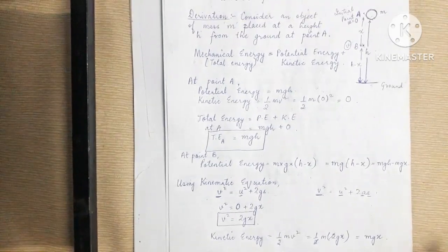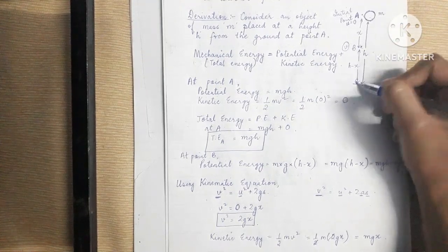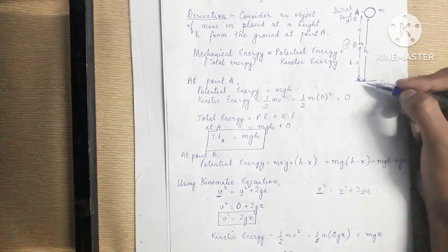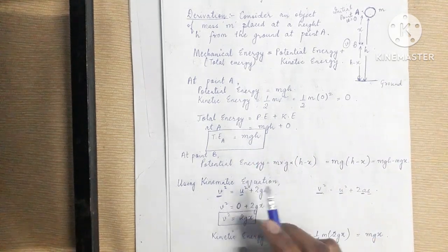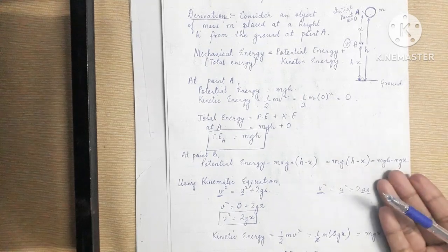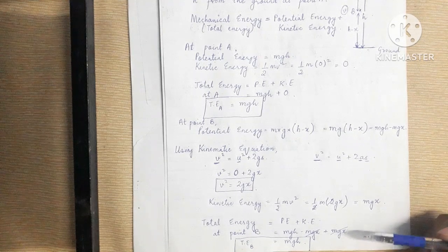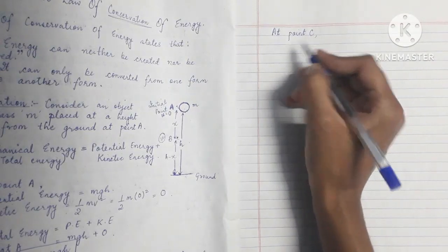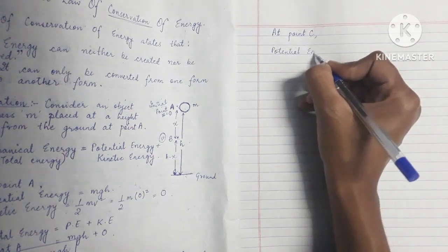Now we move to point C, which is at ground level. When our object moves from A to B and then B to C, we will find total energy at C. We expect it will also equal mgH, and this will prove our law.